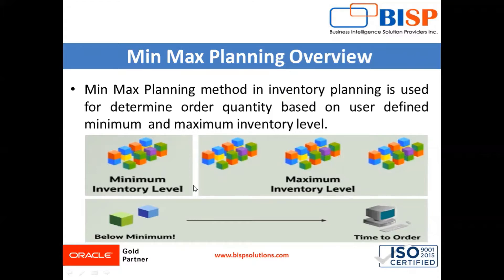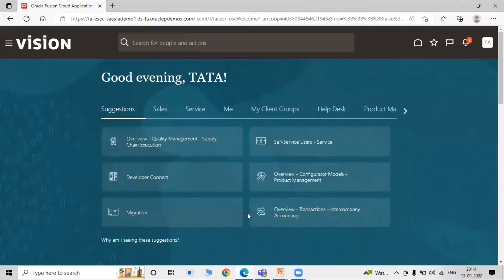In Oracle Fusion Inventory Management application, you can perform min-max planning at both levels: at the organization level and at the sub-inventory level. When it's time to order, we will order an item as soon as our item goes below the minimum. You must specify the organization-level minimum and maximum quantity for your inventory organization to perform organization-level min-max planning.